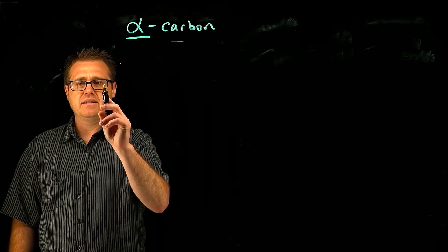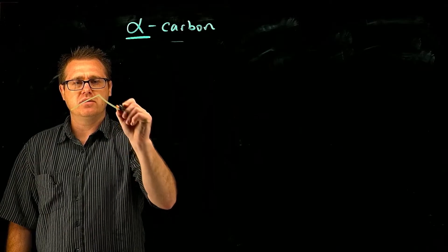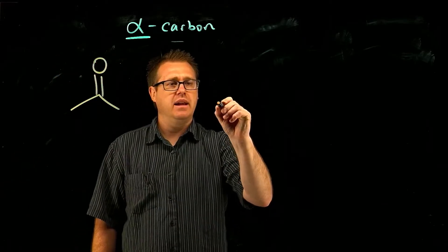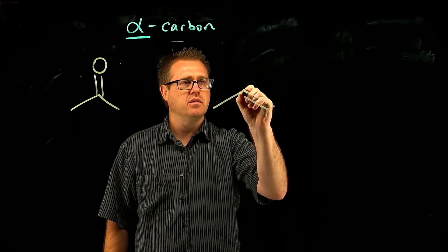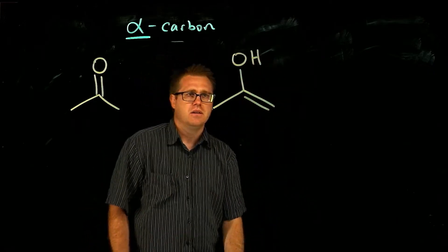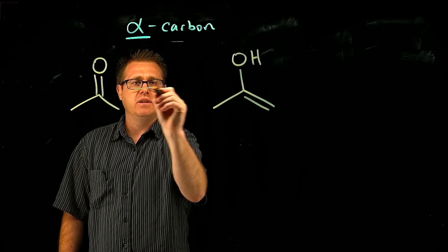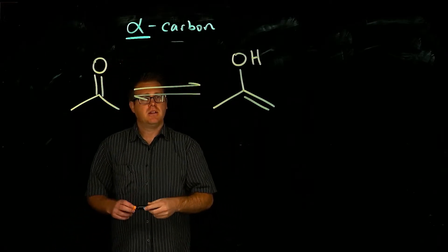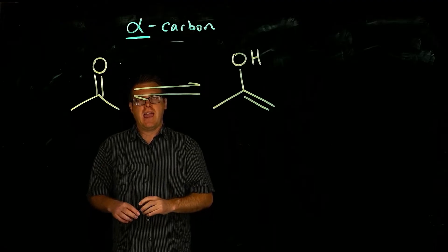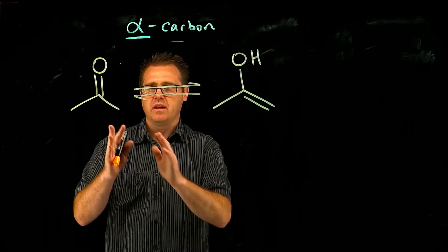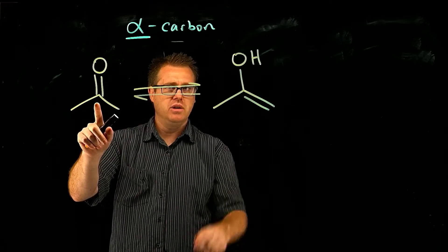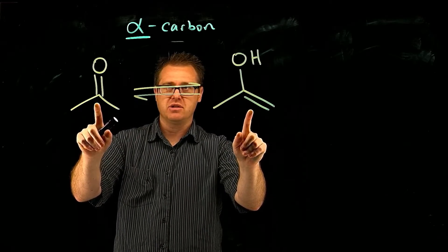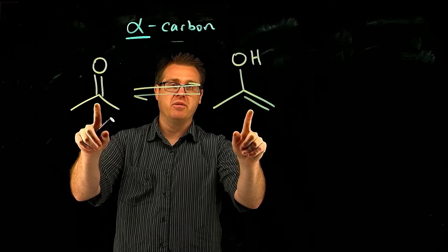When we take a look at ketones and enols, they are going to be at equilibrium with one another. And pay very close attention, going from the ketone to the enol, they're not resonant structures. They are in equilibrium with one another.